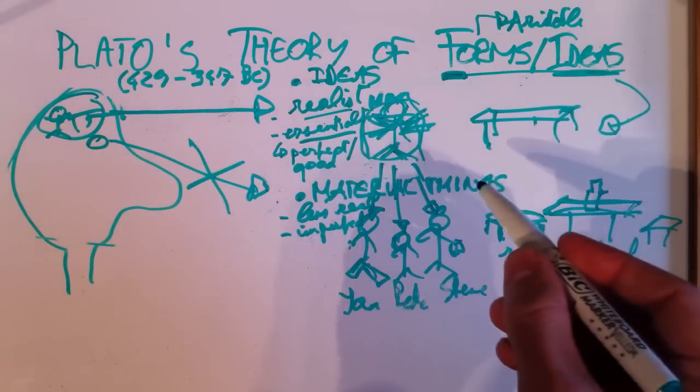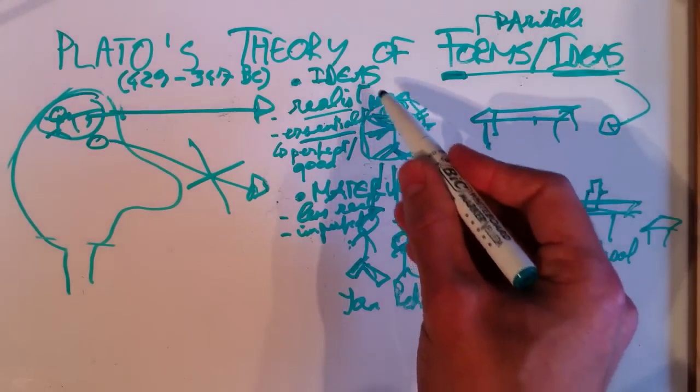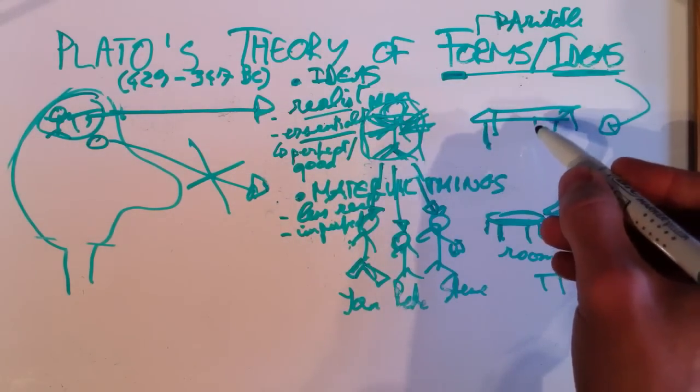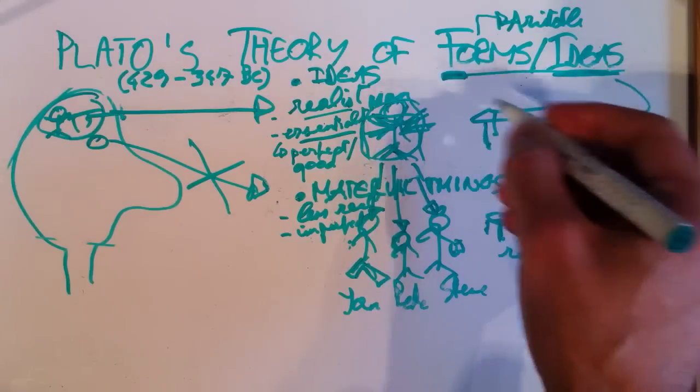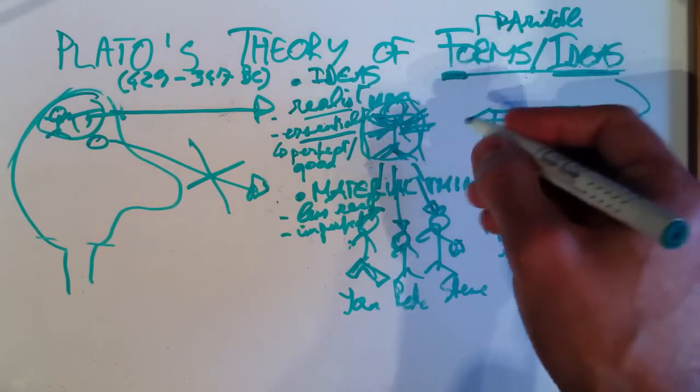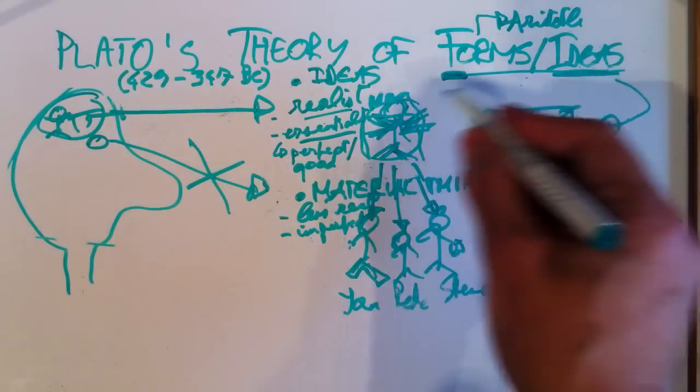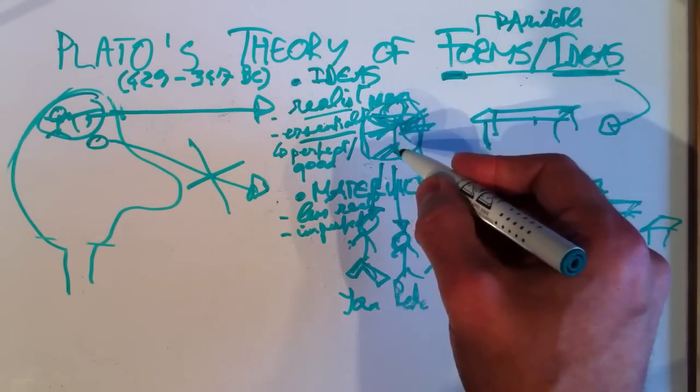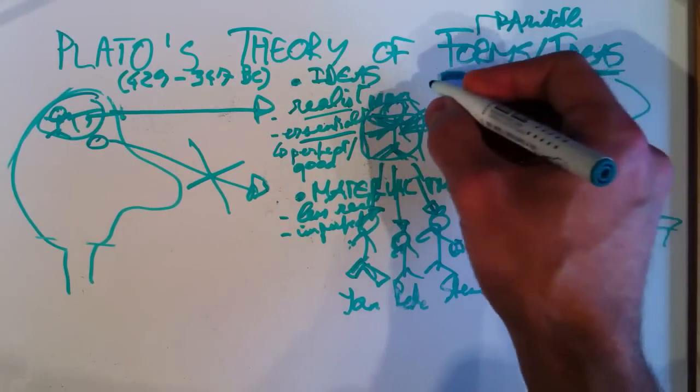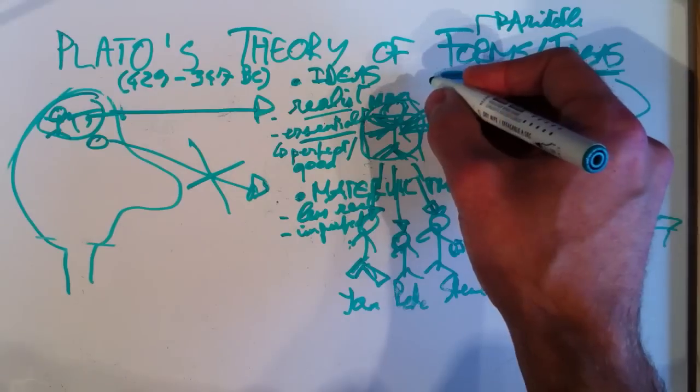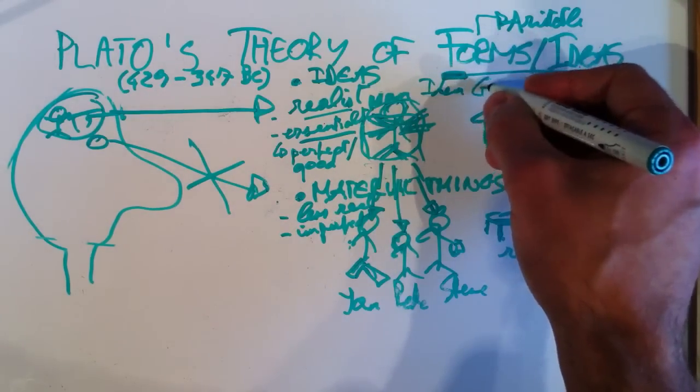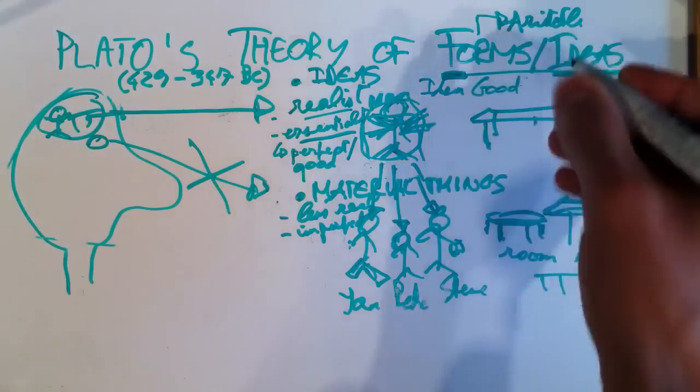Let's first talk about ideas. Both man, the idea of man, has goodness in it, and the table also has goodness in it. So, for Plato, this makes him conclude that there is something similar to ideas such as man and table. Namely their goodness.